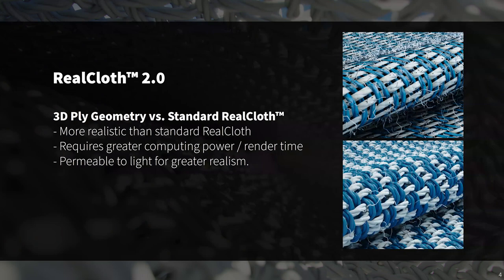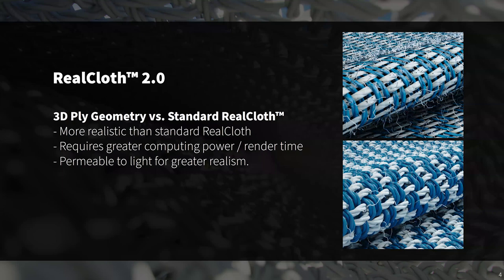What makes Real Cloth 2.0 better than KeyShot 9? The big difference is the ability to create 3D ply geometry. KeyShot 9's real cloth represented a large leap in cloth material replication, but it did not hold up entirely at near-macro camera ranges. The images on the right show the difference between single-sided ply — how real cloth functioned in KeyShot 9 — and 3D ply in KeyShot 10. Single-sided ply tends to appear flatter and lacks the depth of typical woven material, unlike 3D ply.